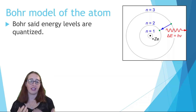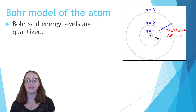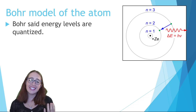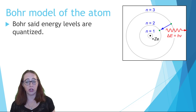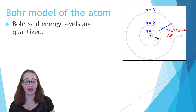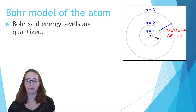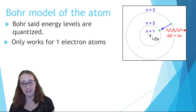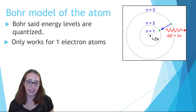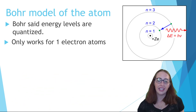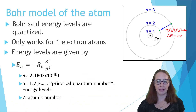Bohr modeled electrons as orbiting the nucleus at defined intervals—this is called quantized energy levels. This is normally discussed as a historical model because it really only works for one-electron atoms and ions. However, using it to gain understanding about the simplest cases will help us understand how more complex cases work, even if we never actually do the math. Let's add in some more details about the energy levels.